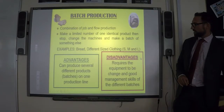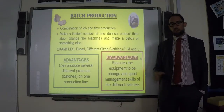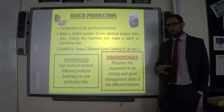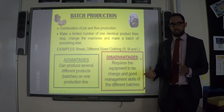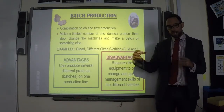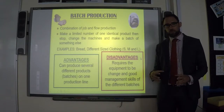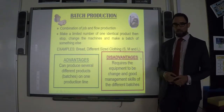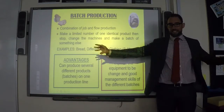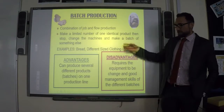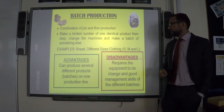Next we have batch production, which sits right in the middle — a combination of job and flow production. With batch production, we make a limited number of one type of product, then stop the machine, change it, and make another batch of something else. For example, with clothing: make a batch of small t-shirts, stop the machine and change the sizes, then make a batch of medium t-shirts, then large, and so on. Similarly with bread: make a white loaf, stop the machine, make a brown loaf, then a baguette.